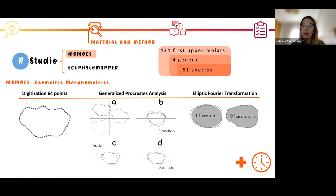After that, I applied the elliptic Fourier transformation and obtained harmonics. I retained the first nine harmonics that describe perfectly the shape of the outline, as you can see in this image.